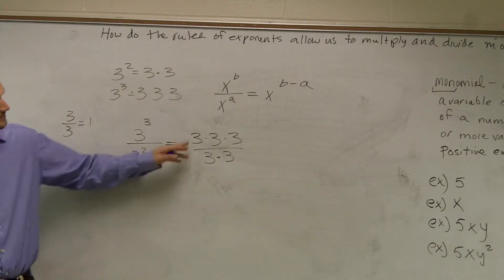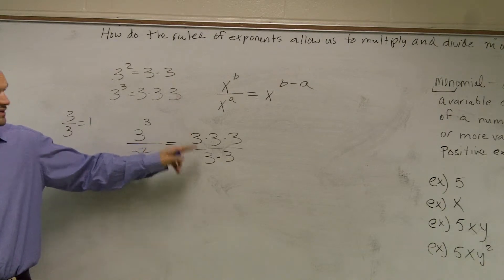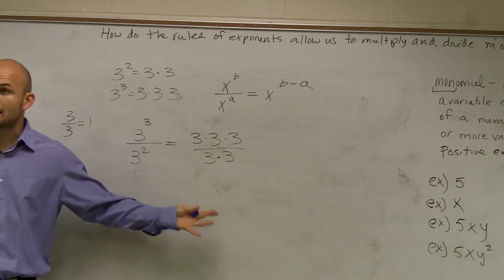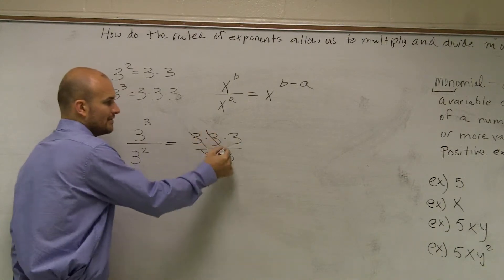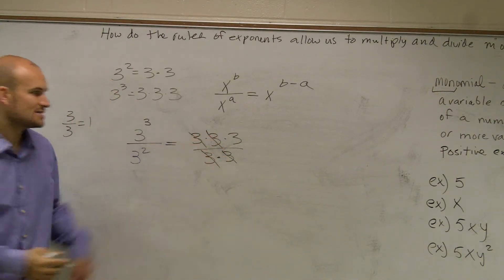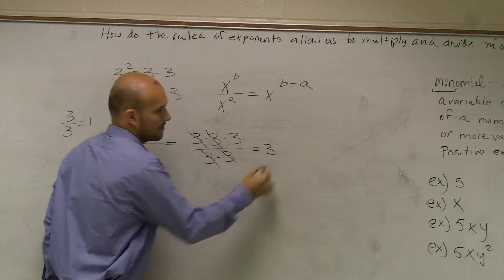OK, well, 3 divided by 3, we can say it kind of cancels out to 1, right? So really, that can be the same thing as 1, and that's the same thing as 1. So therefore, I'm just left with 3.